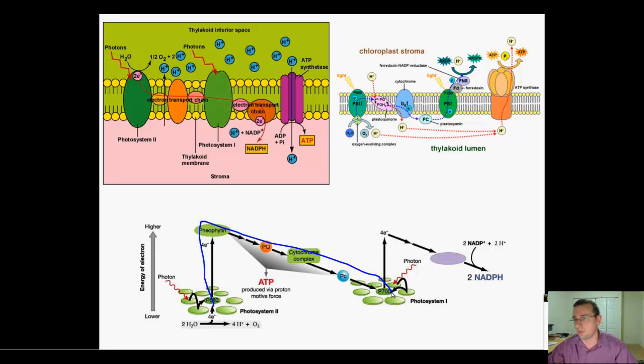downhill again through the proton pumping system involving plastoquinone and the cytochrome complex. Then it goes into photosystem 1 again and gets bumped up again, and downhill again into NADPH. This process is non-cyclic because the electrons that started from water end up in NADPH and never come back towards water.